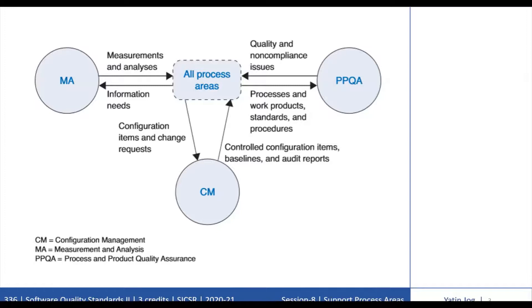The Configuration Management (CM) process area supports all process areas by establishing and maintaining the integrity of work products using configuration identification, configuration control, configuration status accounting, and configuration audits. The work products placed under configuration management include products delivered to the customer, designated internal work products, acquired products, tools, and other items used in creating and describing these work products.